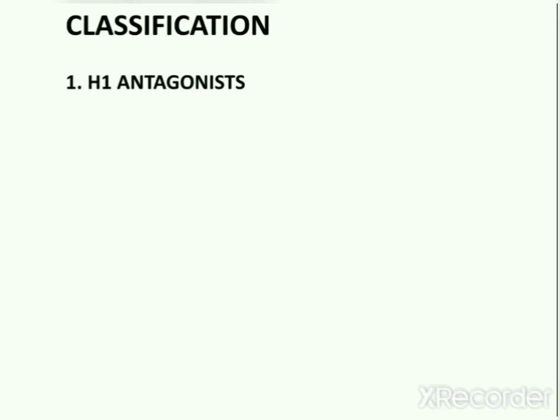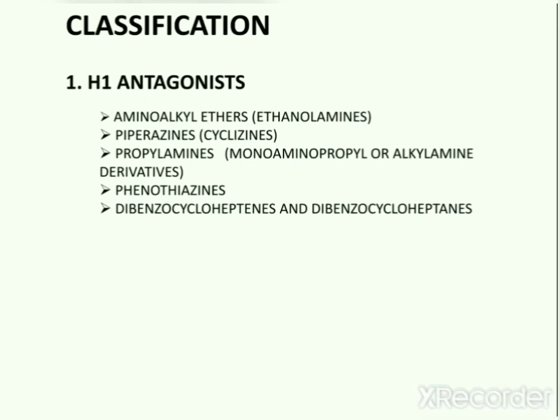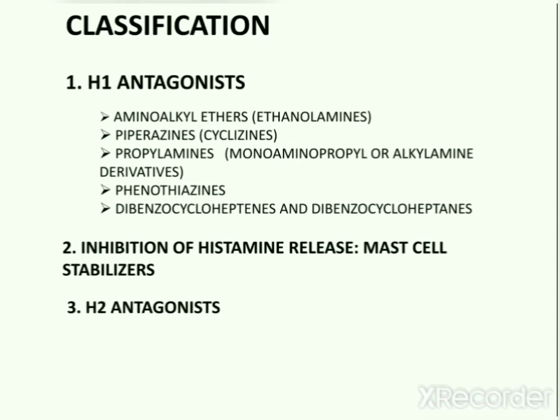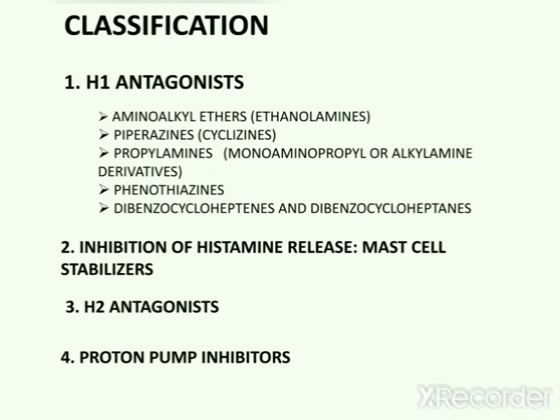The classification of antihistaminic agents is divided into four main categories: H1 antagonists, mast cell stabilizers, H2 antagonists, and proton pump inhibitors. The largest subcategory is H1 antagonists, which are further subdivided into various categories according to their structural features.